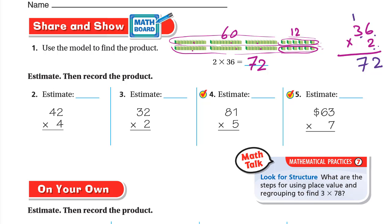Estimate then find the product for 4 × 42. Estimate: round 42 to nearest ten — to the right of 4 is 2, which is weak, so keep it 40. So 4 × 40: put the zero out and 4 × 4 = 16, giving an estimate of 160. Now multiply: 4 × 2 = 8, then 4 × 4 = 16. The answer is 168.